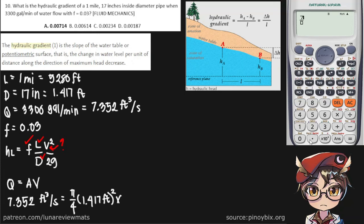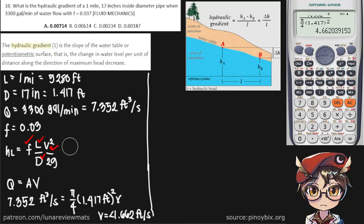Now computing for this, pi over 4 times 1.417 squared, we get a velocity of 4.662 feet per second. Now we just separate this part. So now we can simply start putting our values in now that we know our V.